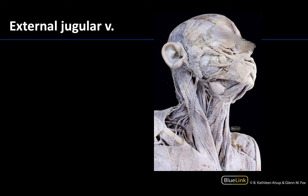Last but not least, the external jugular vein — often abbreviated EJV, not to be confused with the internal jugular vein. The internal jugular vein is a deep vein, whereas the external jugular vein is a superficial vein of the neck. It is typically the largest and most obvious superficial vein of the neck and runs superficial to the sternocleidomastoid muscle. This is a very classic anatomical relationship that often comes up on boards — that large vein crossing over the sternocleidomastoid is the EJV. It drains into the deep subclavian vein, which is more in the root of the neck region, lateral and deep to the sternocleidomastoid.